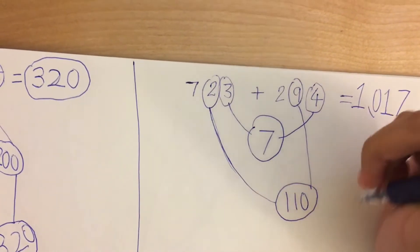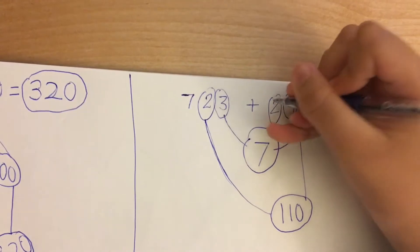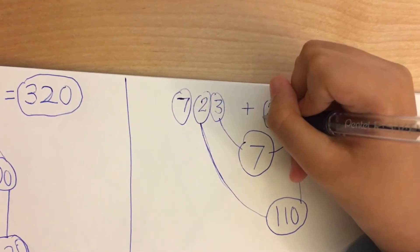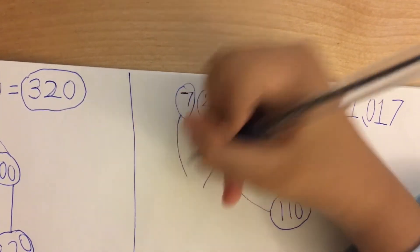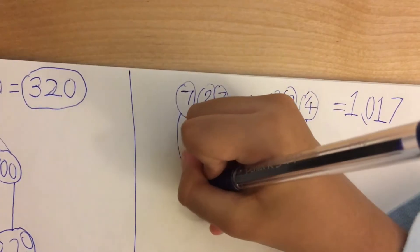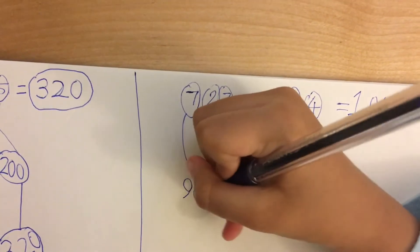And then there is 200 and 700. Put it together and you will get 900.